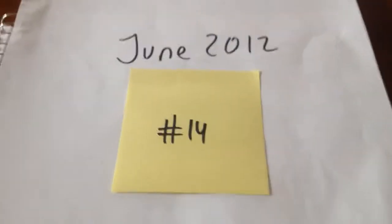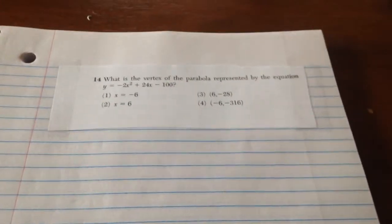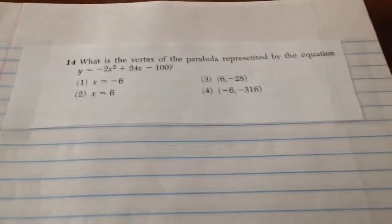June 2012, number 14. In this question they ask, what is the vertex of the parabola represented by the equation y equals negative 2x squared plus 24x minus 100?